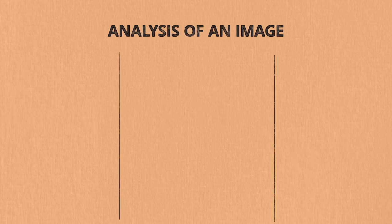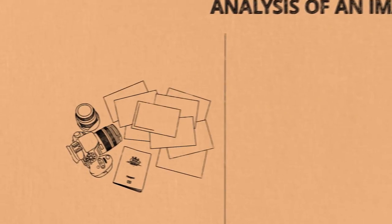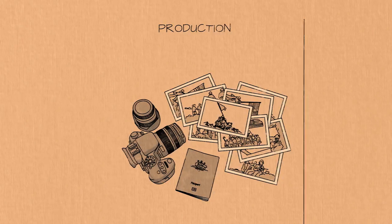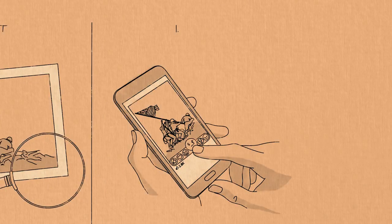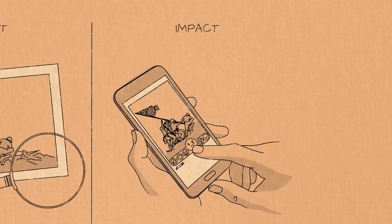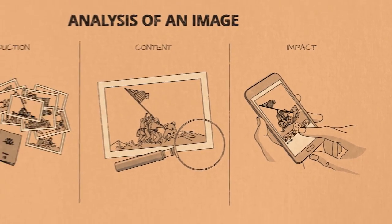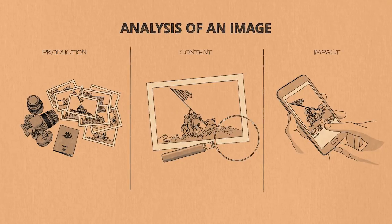To have a proper, precise understanding of an image, we should walk through three steps. First, we should do an analysis of the production of an image. Second, we should do an analysis of the content of the image itself. And third, we should do an analysis of the actual impact of an image. Each of these three steps has its own methods and ways we need to go about doing analysis.